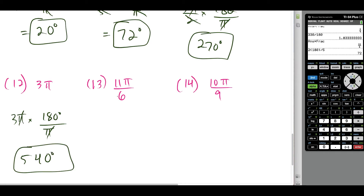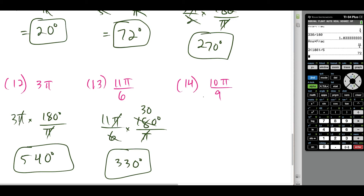For 11π over 6, multiply by 180 degrees over π radians. The π's cancel, 180 over 6 is 30, and 11 times 30 gives 330 degrees. For 10π over 9, multiply by 180 degrees over π radians. 180 over 9 is 20, and 20 times 10 gives 200 degrees.